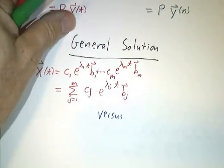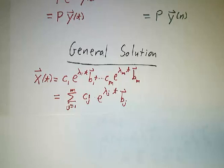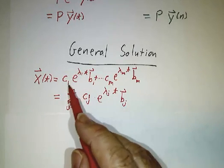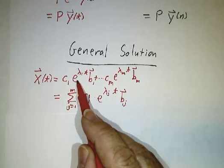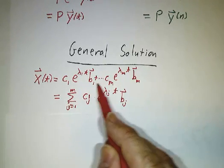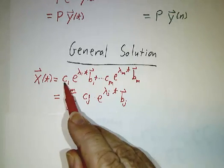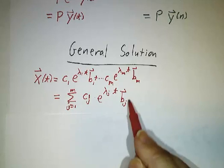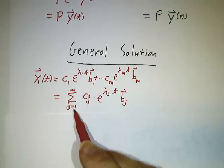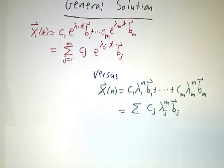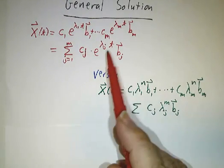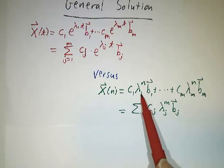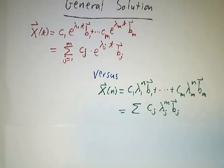Finally, the general solution to the differential equation. If you weren't given initial conditions but instead asked for the general solution, it's a sum of terms — each term is e^(λt) times an eigenvector — with arbitrary coefficients that are really y1(0), y2(0), ..., ym(0). This is the most general solution to the differential equation. The most general solution to the difference equation is the exact same thing, except instead of e^(λt) you have λ^n. That's it.